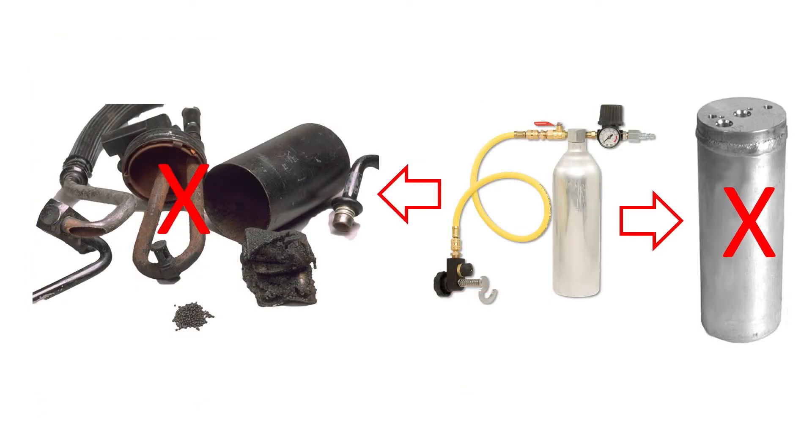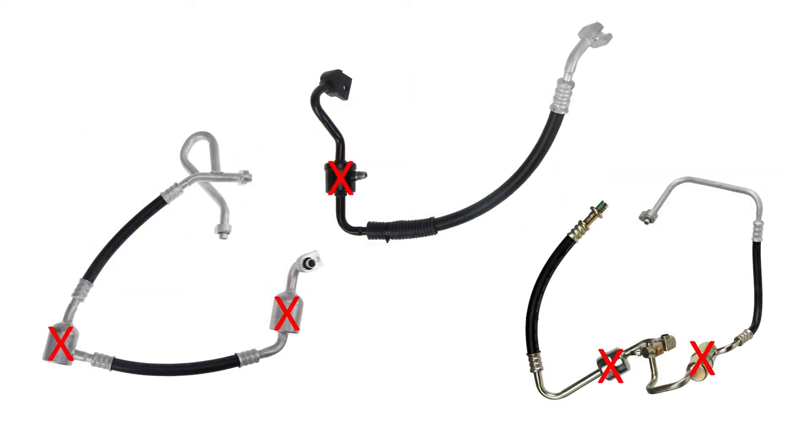Components that cannot be flushed and must be replaced are the dryer, the expansion device, and lines and hoses that have any kind of inline filter or muffler.